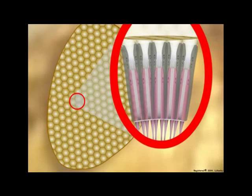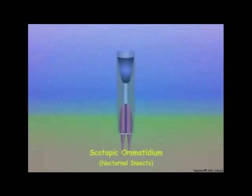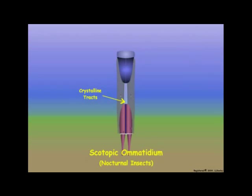The structure of scotopic ommatidia is similar to that of photopic ommatidia, except that scotopic ommatidia appear to have an open space referred to as the clear zone between the crystalline cone and the retinula cells. The clear zone actually contains transparent crystalline tracts that arise from the retinula cells and extend to the crystalline cone. The crystalline tracts act as light guides.